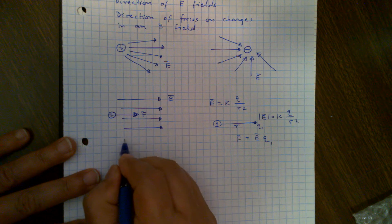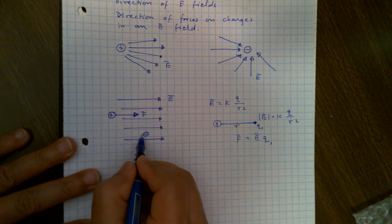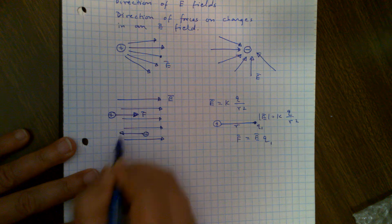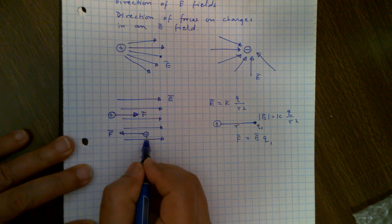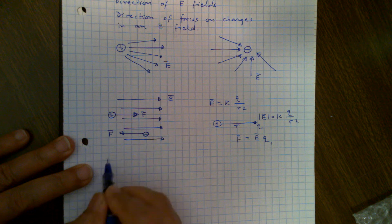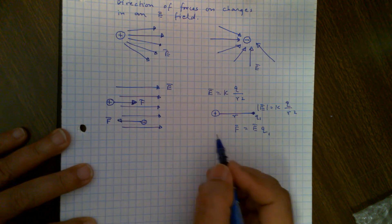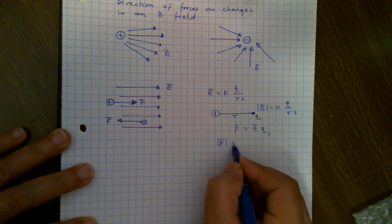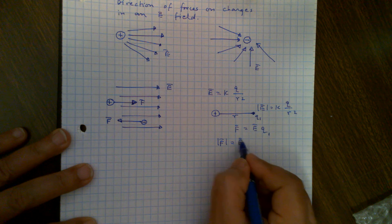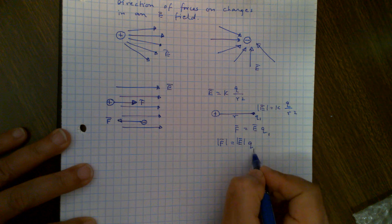Now, the electric field lines are going in that direction, but if you have a negative charge, then the force on the negative charge will be opposite to the direction of the electric field. The force on this negative charge will be towards the left, towards the negative x direction. The magnitude of the force is calculated the same way: F magnitude equals the magnitude of the electric field at that point times the test charge q1.